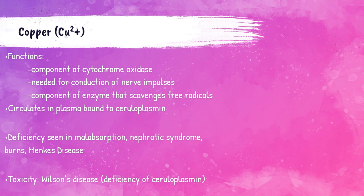Copper is found as copper 2+ in tissues. Copper is needed for nerve impulse conduction and is a component of cytochrome oxidase, which helps produce energy intracellularly. The majority of copper is bound to ceruloplasmin in the plasma. Patients with deficiencies of copper are usually due to malabsorption. Patients can also be copper deficient with nephrotic syndrome and those with a genetic disorder called Menke's disease, which interferes in the metabolism of copper. In patients with nephrotic syndrome, the urine sediment shows oval fat bodies.